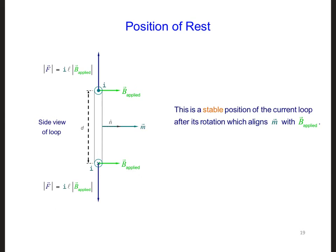Now once the loop has rotated to a vertical orientation as shown here, then I crossed with B applied has no tangential component, and the loop no longer feels a torque. So tau vector is equal to zero. Once M, this magnetic moment, is aligned with B applied, since it's in the same direction, the loop is in a stable position. In other words, the loop wanted to rotate until its own magnetic moment, M, was aligned with the applied B field.